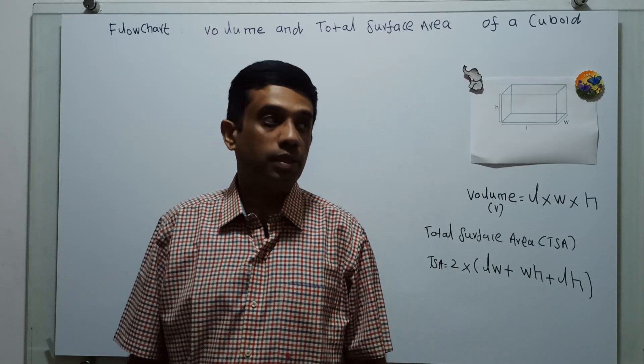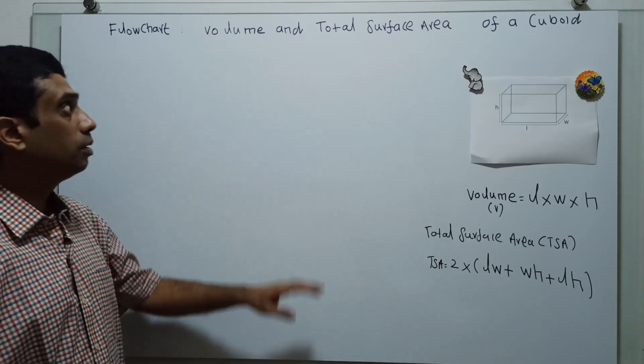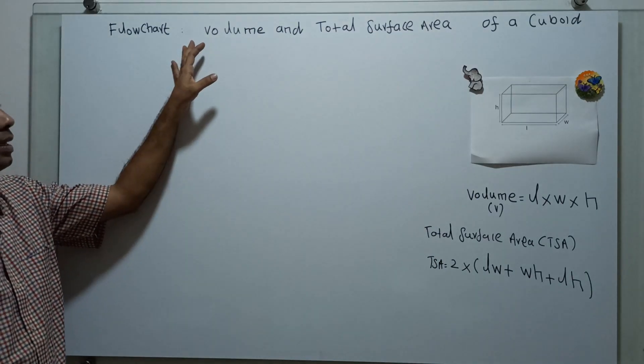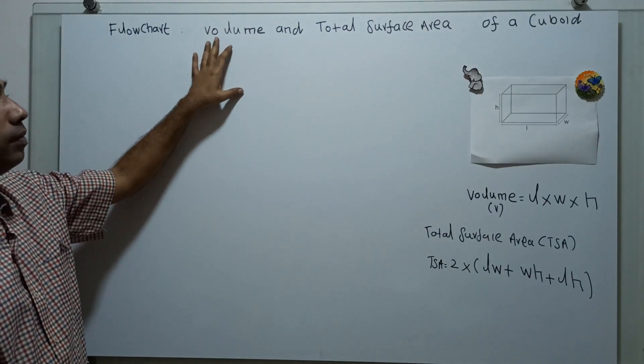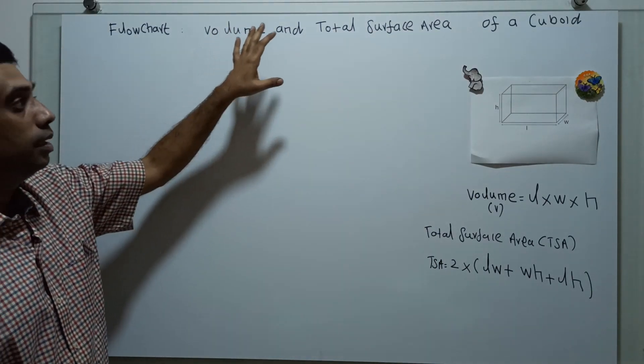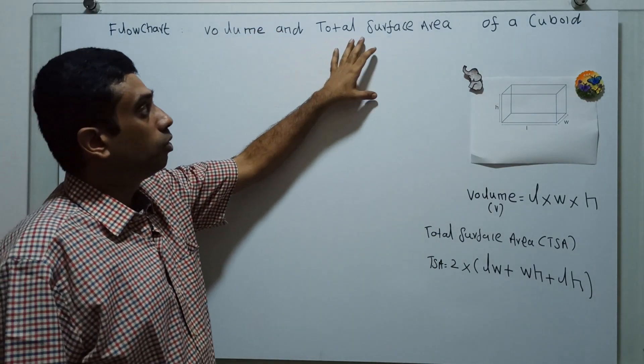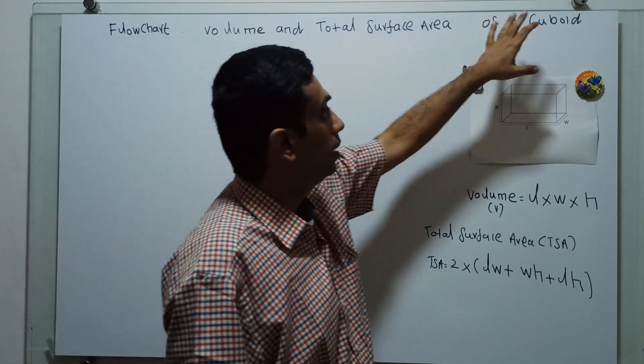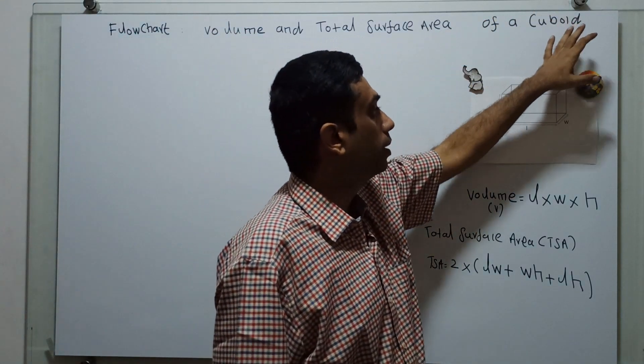Hello friends, we are going to draw a flow chart to calculate the volume and total surface area of a cuboid.